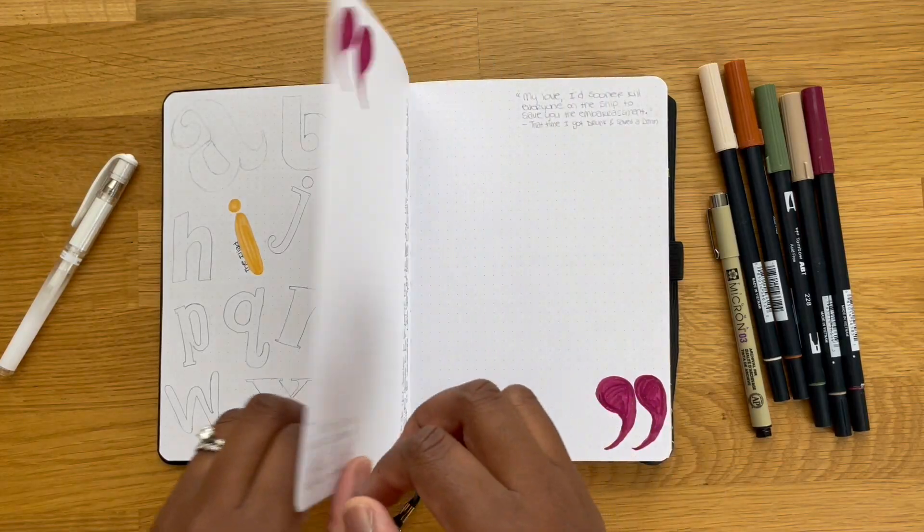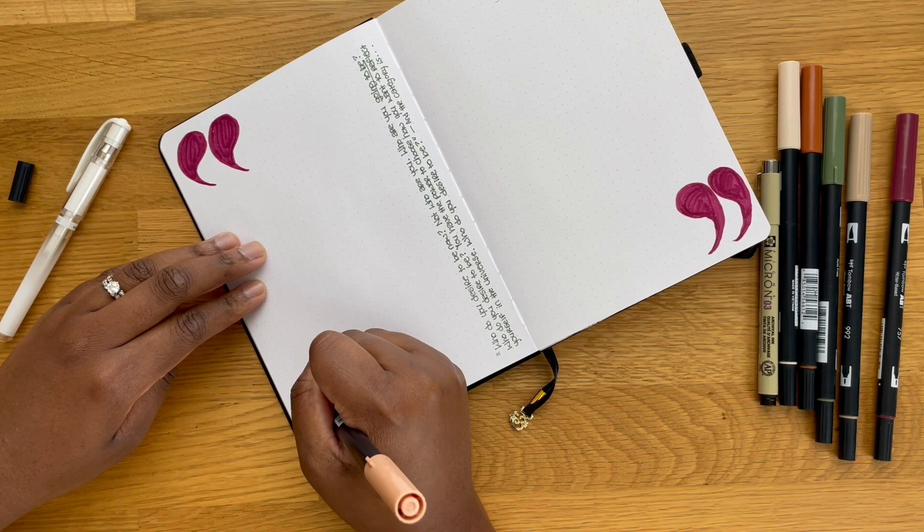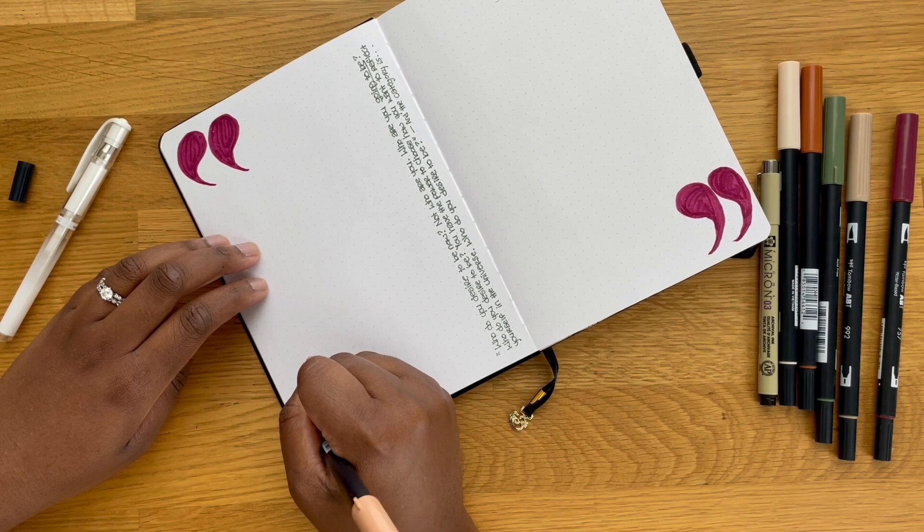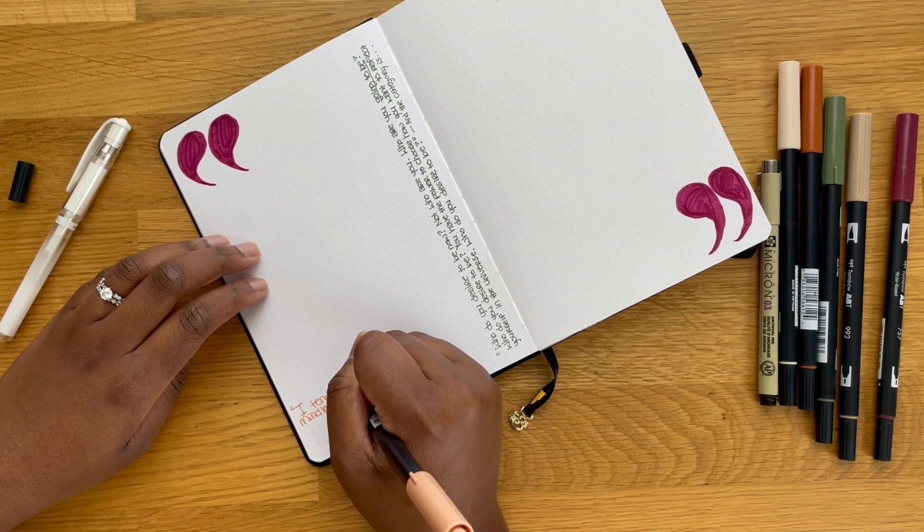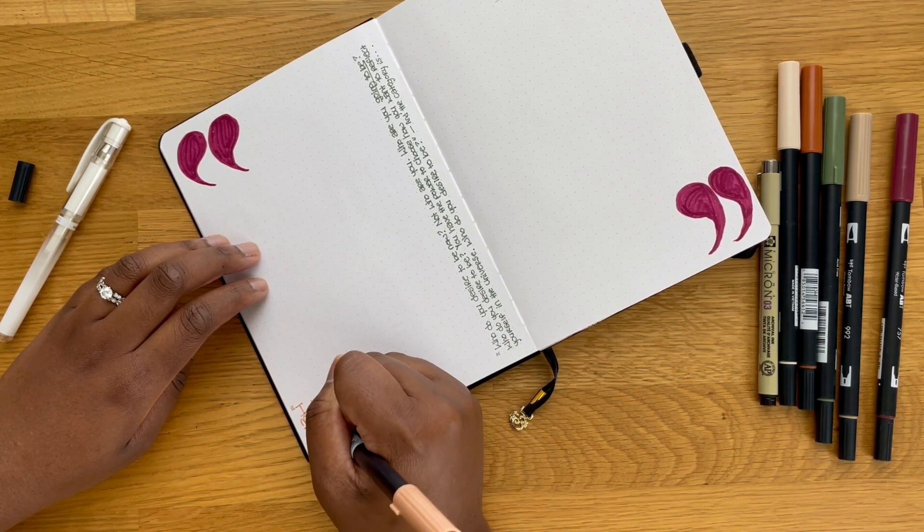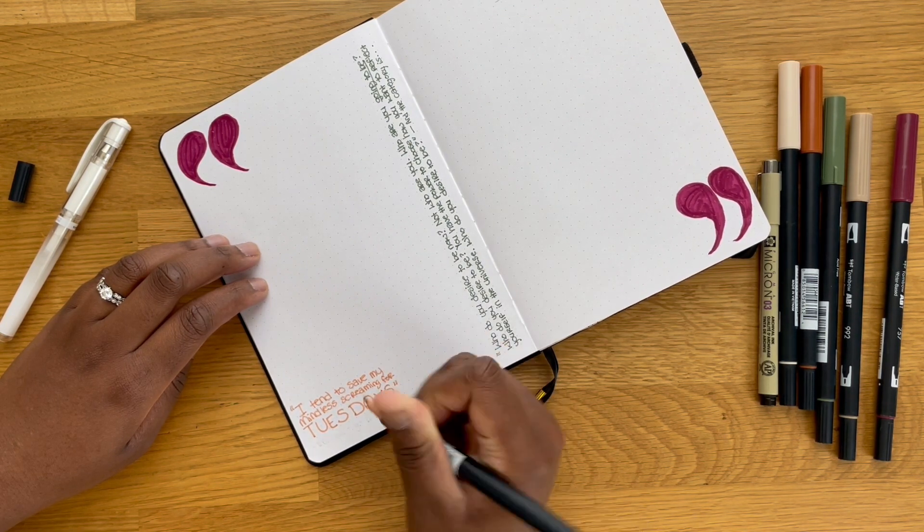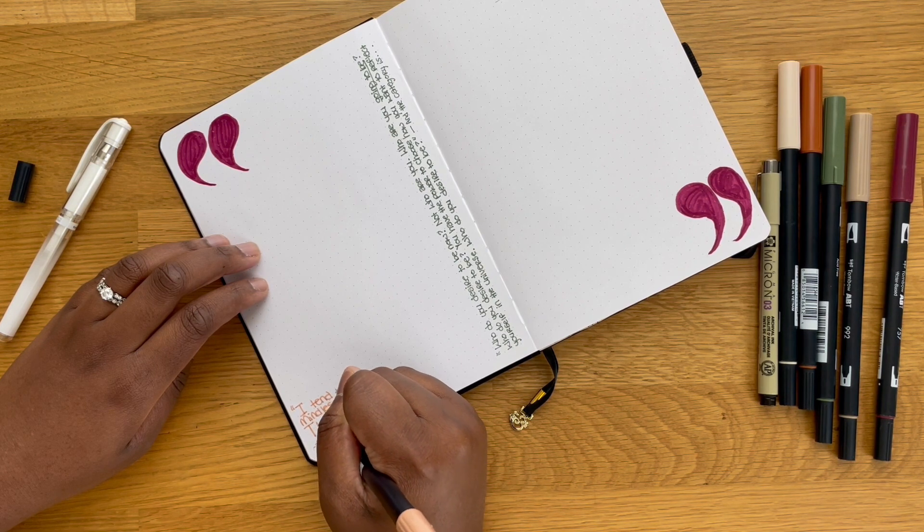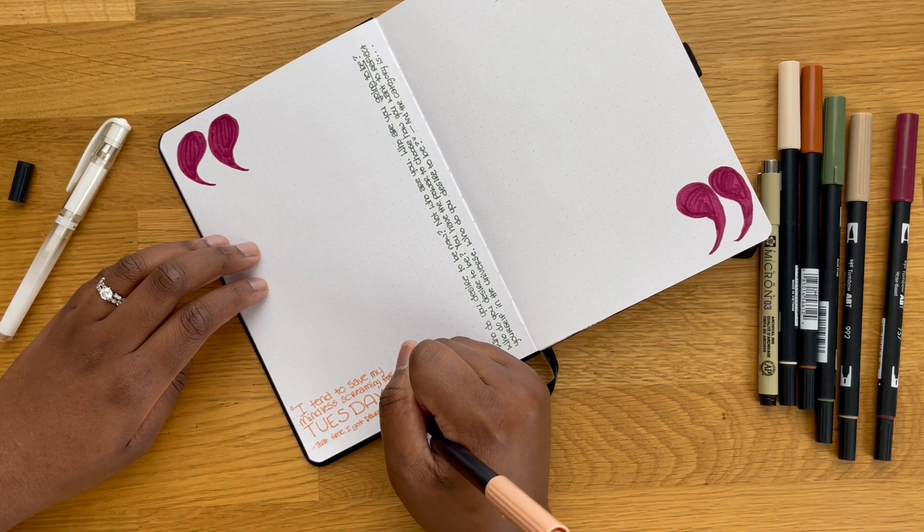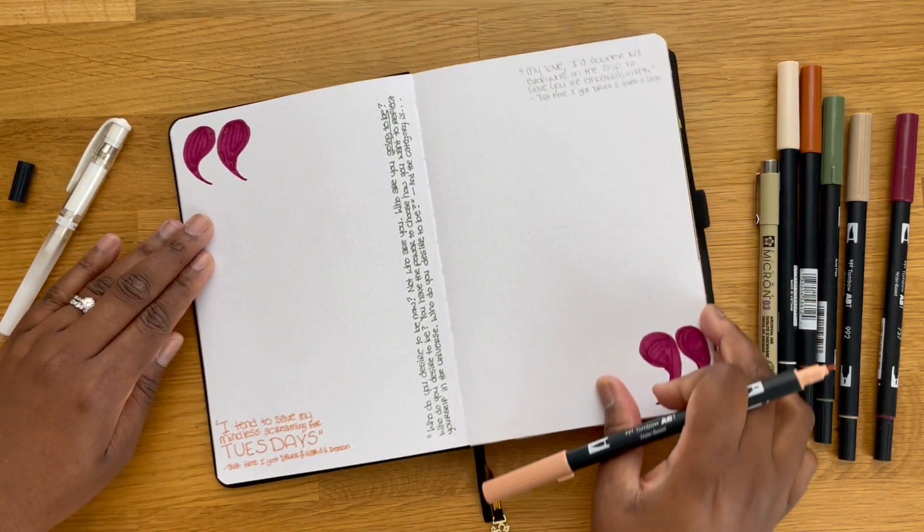For my quotes page, I paid a bit better attention this time around and was able to add these two quotes here, both from the book That Time I Got Drunk and Saved a Demon. This book is so good, it's so cute, it's so funny, I absolutely loved it. To give you a bit more background on the book, it follows the main character Cinnamon. One night she gets drunk, she's going home, and she accidentally saves a demon named Fallon. When she realizes that he can talk, like actual spoken rational words, she's just like, 'oh my gosh, like you can speak,' and then he says, 'I tend to save my mindless screaming for Tuesdays.'